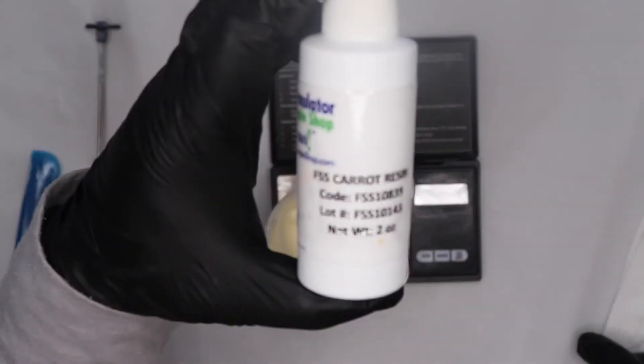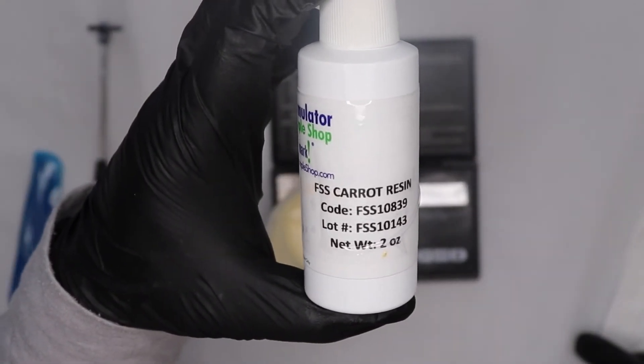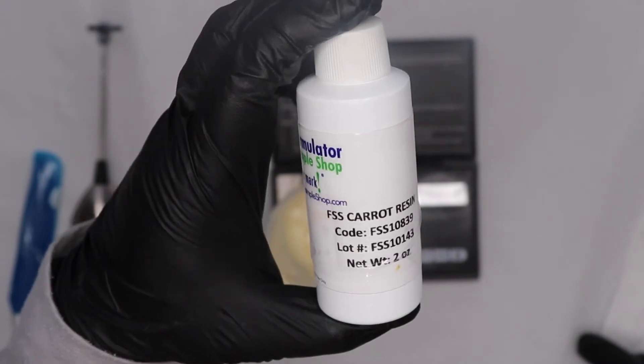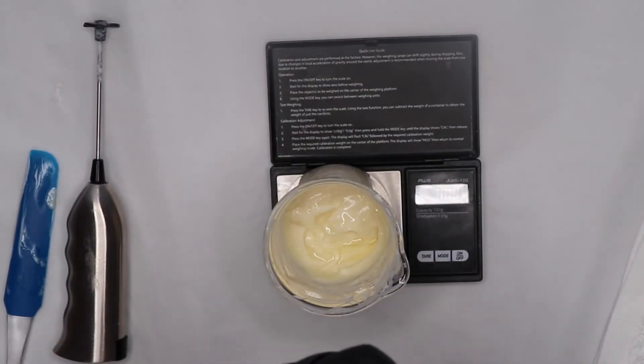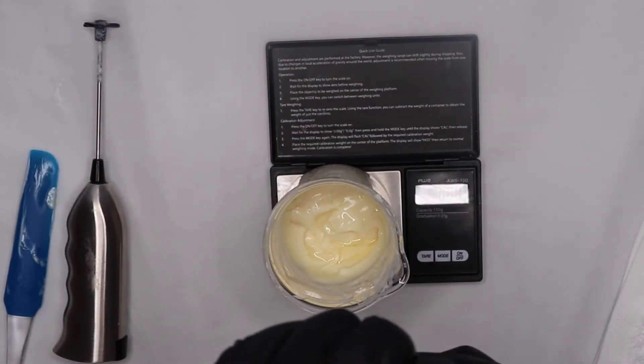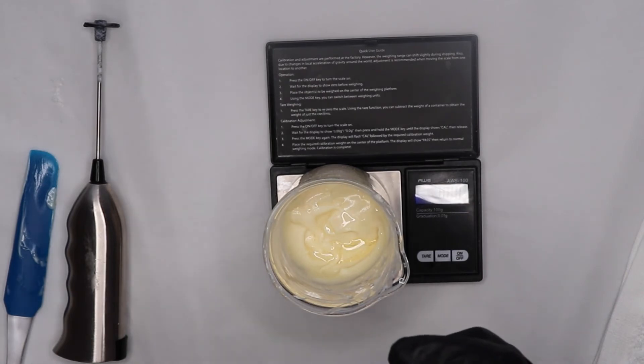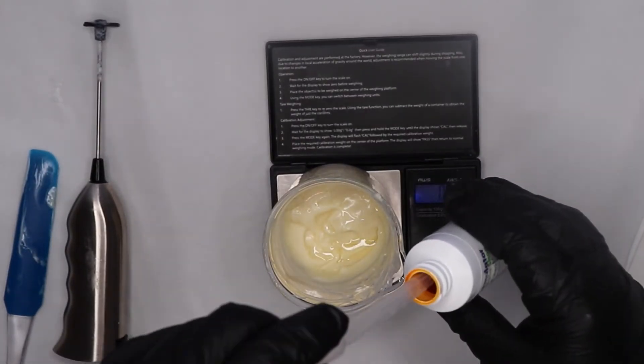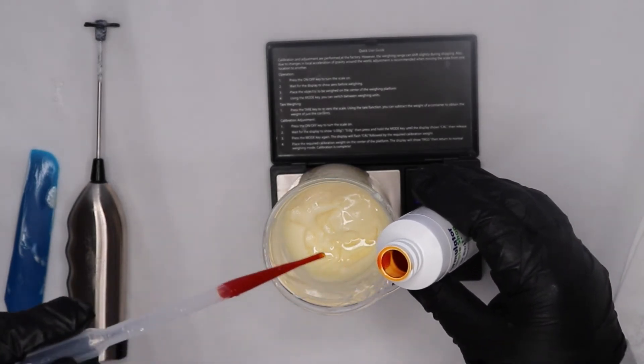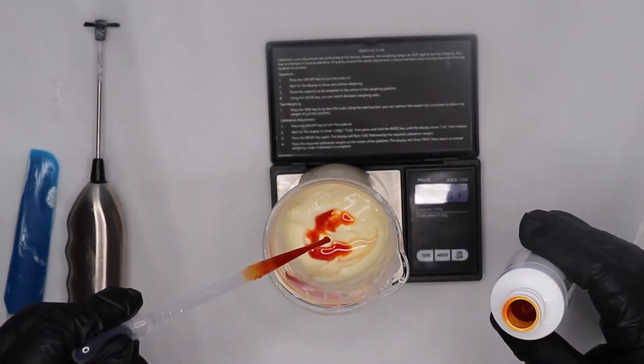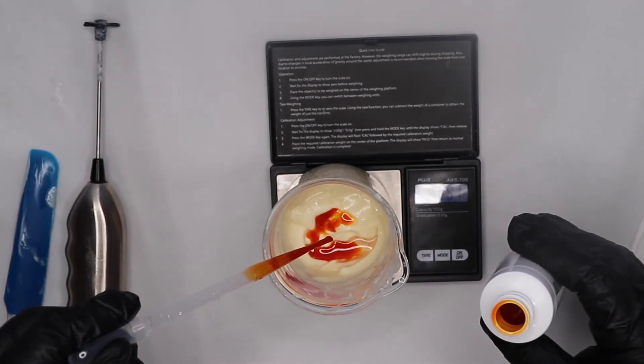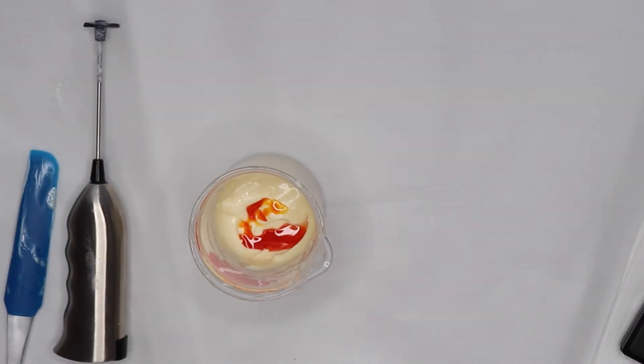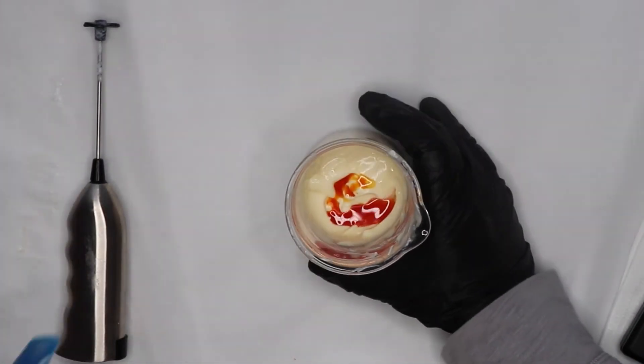Okay now I'm going to be adding the carrot resin. This is what's going to give us the nice orange color. It's also really good for rejuvenation. It's got a lot of vitamin C, D, and E. And we're going to use the pumpkin resin at 0.6 grams. Oh, look at that. It's so pretty.